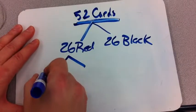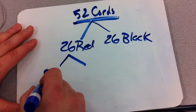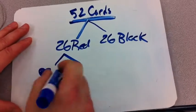It gives me 26 red cards and 26 black. The red cards can be split from there. I have hearts, so I have 13 of those. And I have diamonds.